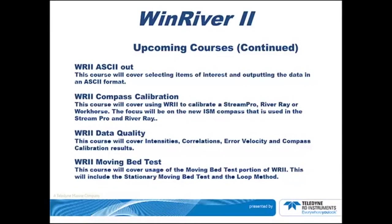Wind River 2 ASCII Out: this course will cover selecting items of interest and outputting data in ASCII format to a file. Compass Calibration: this course will cover using Wind River 2 to calibrate a StreamPro, RiverRay, or Workhorse, with focus on the new ISM compass used in the StreamPro and RiverRay. Next is Data Quality, covering intensities, correlations, air velocities, and compass calibration results. Finally, the Moving Bed Test course will cover usage of the Moving Bed Test in Wind River 2, including the Stationary Moving Bed Test and the Loop Method.